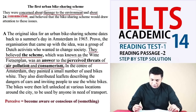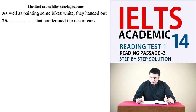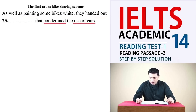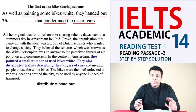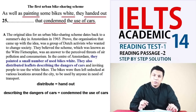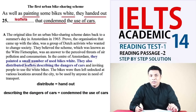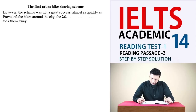Next: 'As well as painting some bikes white, they handed out ___ that condemned the use of cars.' Keywords are 'painting white,' 'condemned,' and 'use of cars.' From the sixth to seventh lines of paragraph M, the writer explains that in the centre of Amsterdam they painted a small number of bikes white and also distributed leaflets describing the dangers of cars. 'Distributed' means 'handed out,' and 'describing the dangers of cars' means 'condemning the use of cars,' so the answer is 'leaflets.'